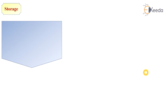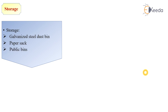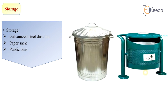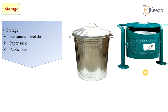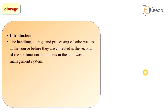After collection of solid waste, the next step is storage. Storage can be done in galvanized steel dustbins, paper sacks, or public bins. These are containers in which we collect and store solid waste. The handling, storage, and processing of solid waste at the source before they are collected is the second of the six functional elements in the solid waste management system.